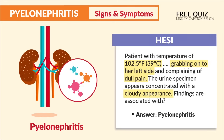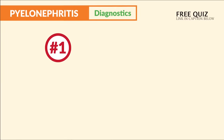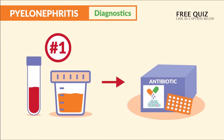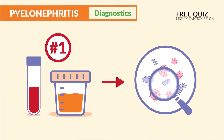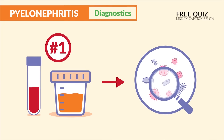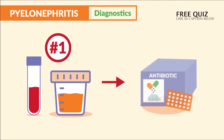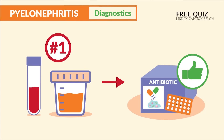Those findings are associated with pyelonephritis. The first action is to obtain blood and urine cultures before starting antibiotics — many students get this wrong. We take cultures first so that we can identify the organism causing the problem and determine the most effective antibiotics to kill it.